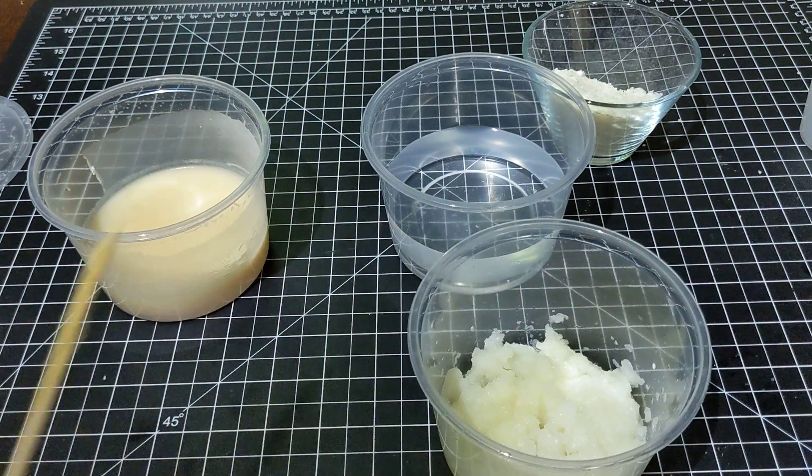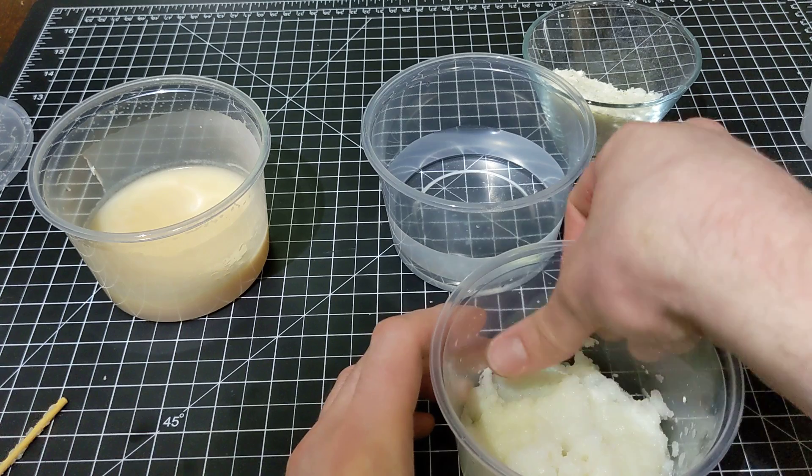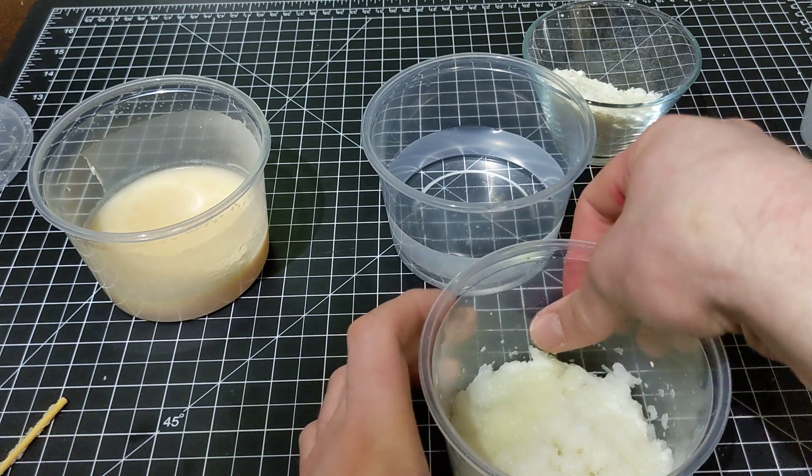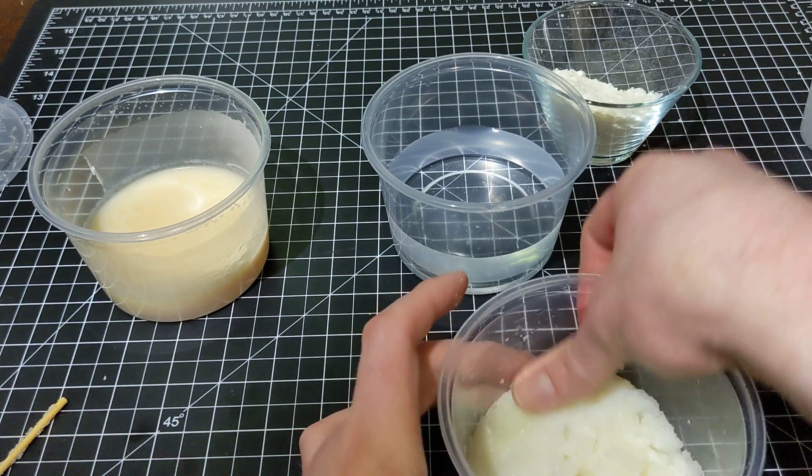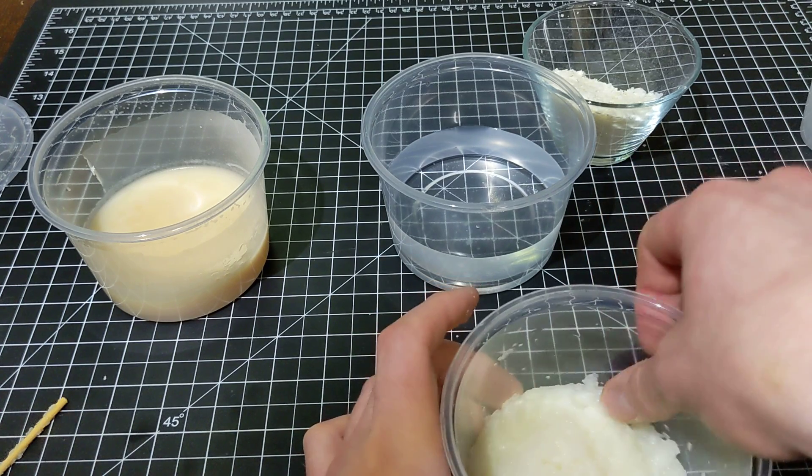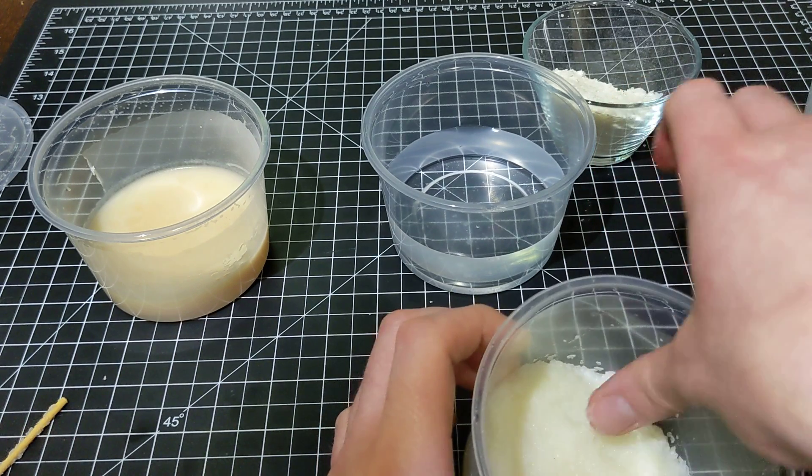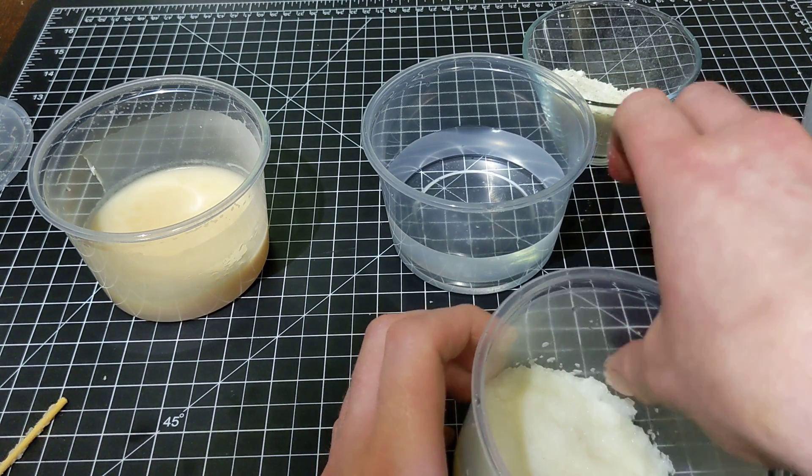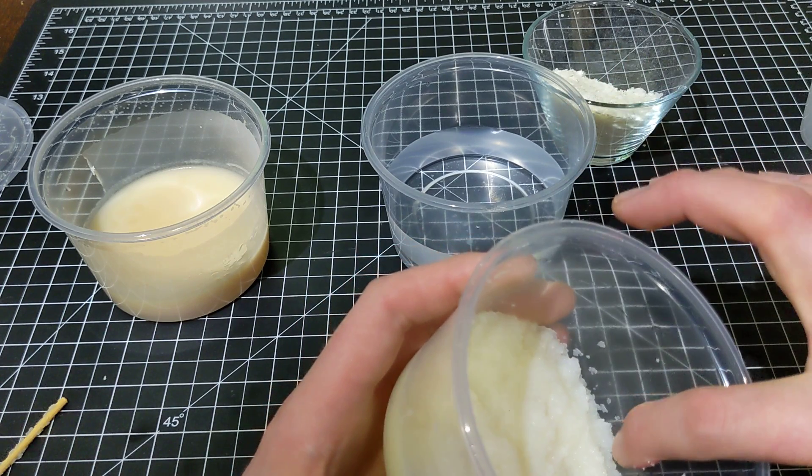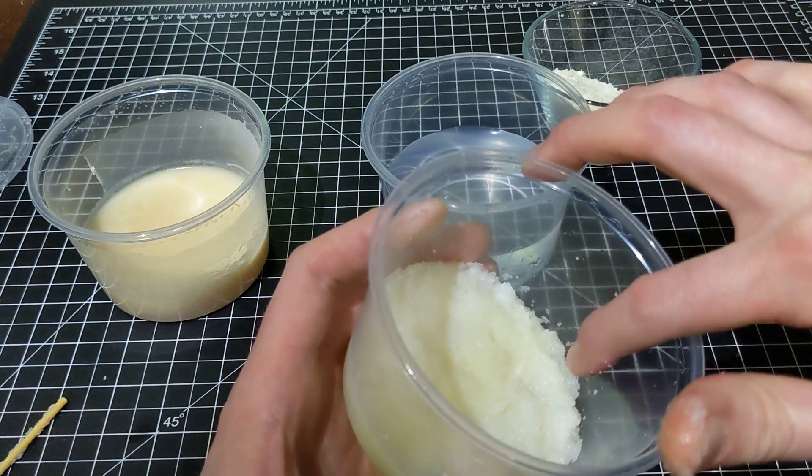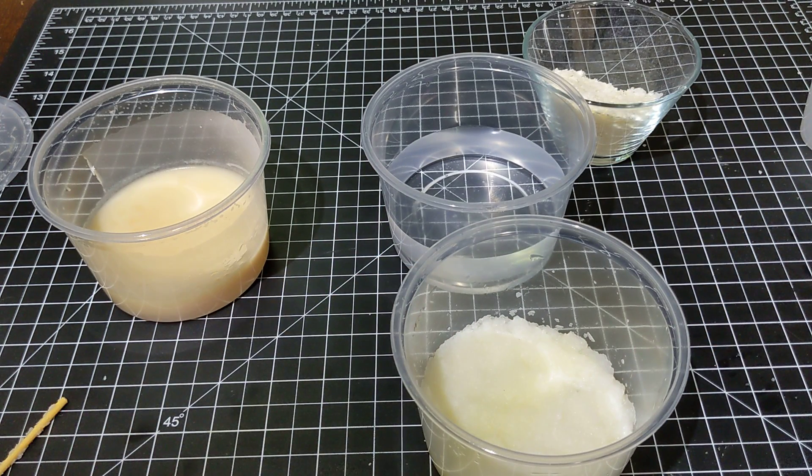So microworms, they want to live in an environment that's damp, but they're not aquatic. They will drown in water. So you don't want too much, but you also want to keep it moist or they'll dry out. So we're looking for kind of a specific texture here. If you touch it, it should feel wet. I would say it should feel wet, but you don't want water pooling up around the edges here. So I'm pretty happy with that.